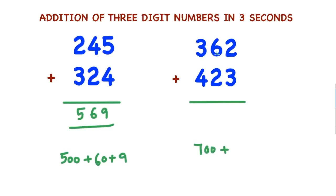In the tens place, 6 is there — you consider 60. In the tens place, 2 is there — you consider 20. 60 plus 20 is 80. Now in the units place, 2 plus 3 is 5. So the answer is 700 plus 80 plus 5, which is 785.